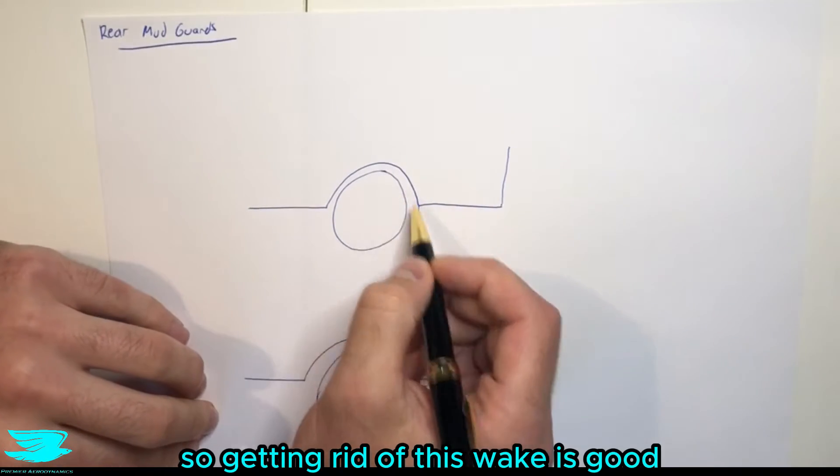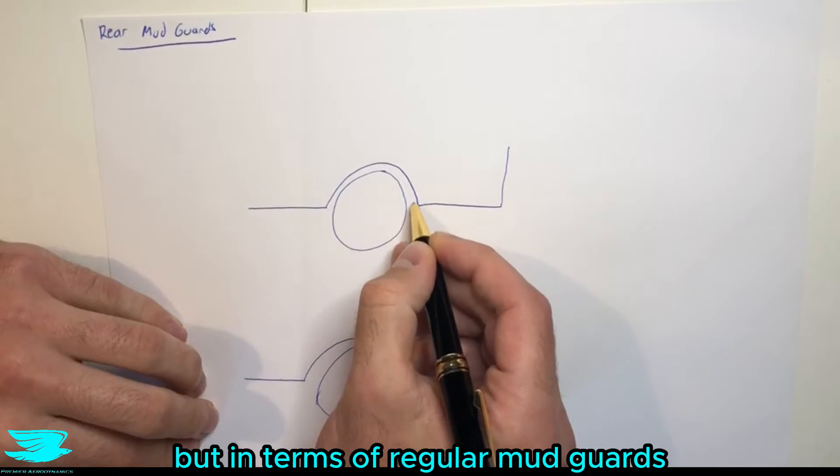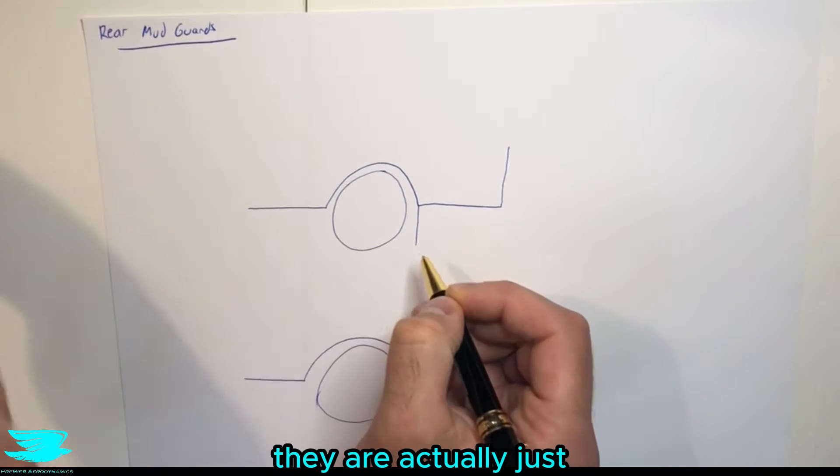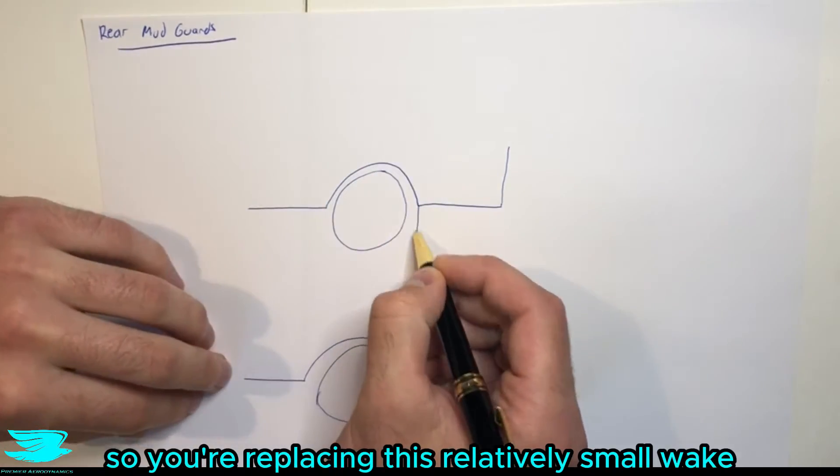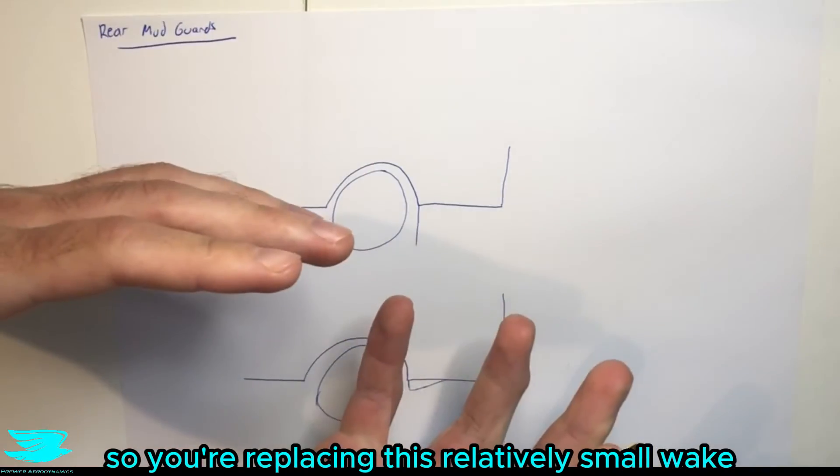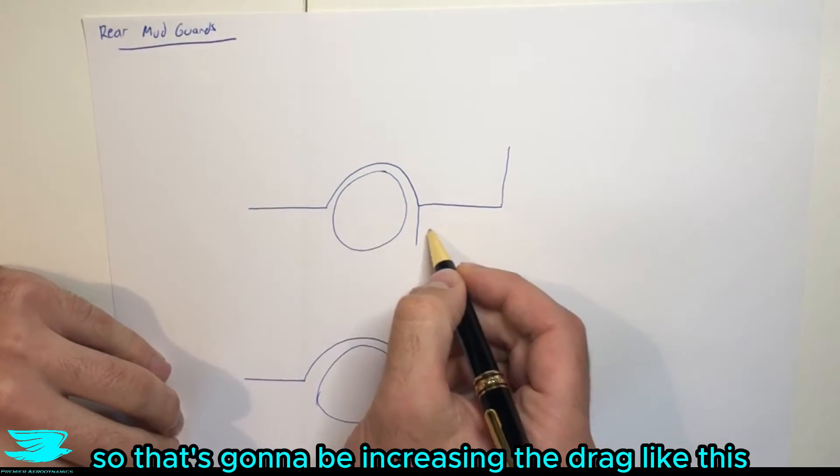So getting rid of this wake is good, but in terms of regular mudguards, they are actually just resulting in greater wakes behind the rear wheels anyway. So you're replacing this relatively small wake with a larger wake, relatively speaking. So that's going to be increasing the drag like this.